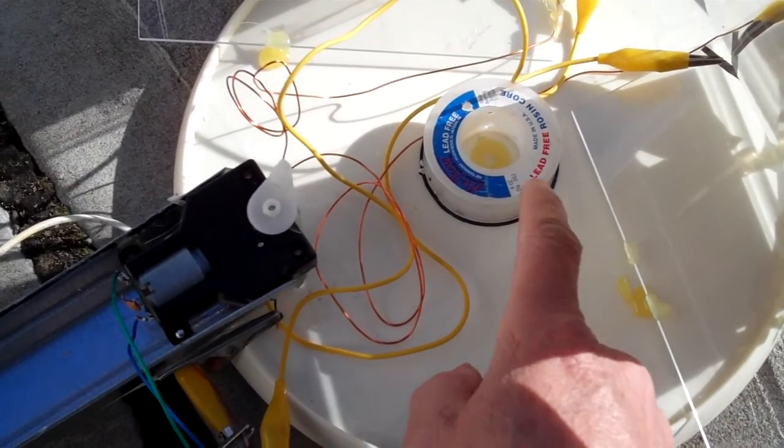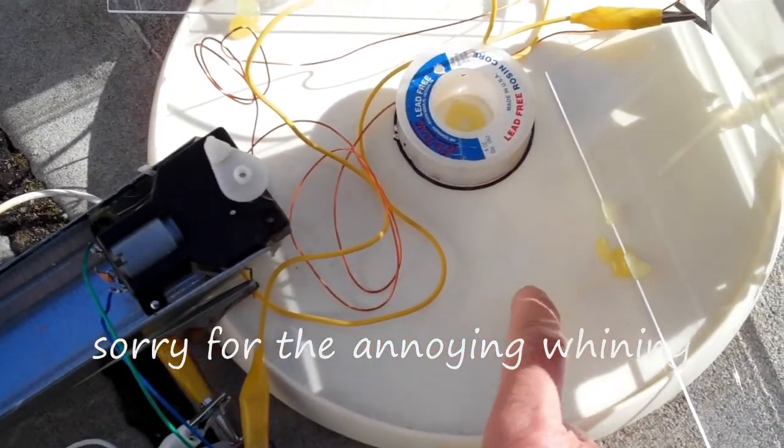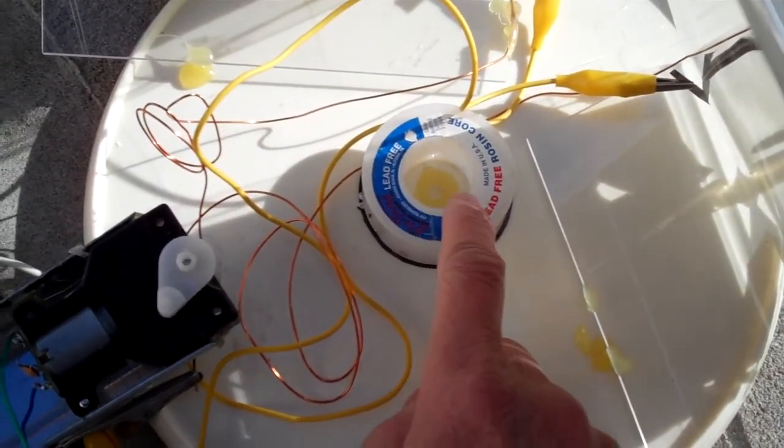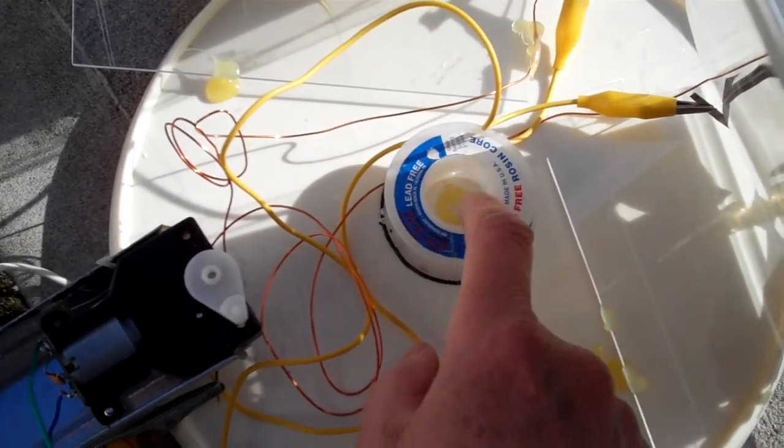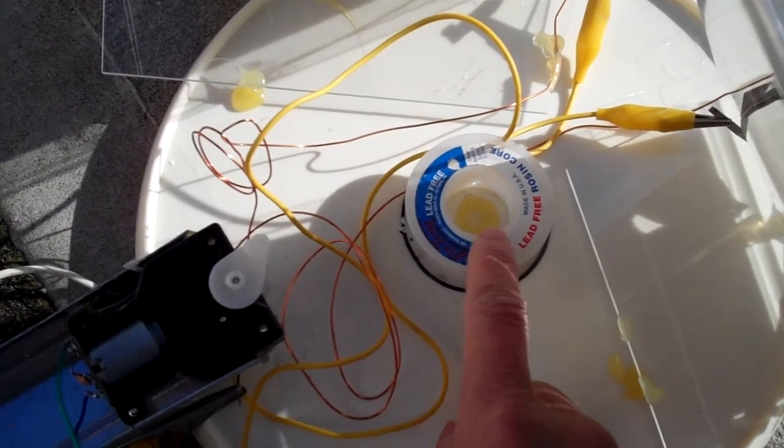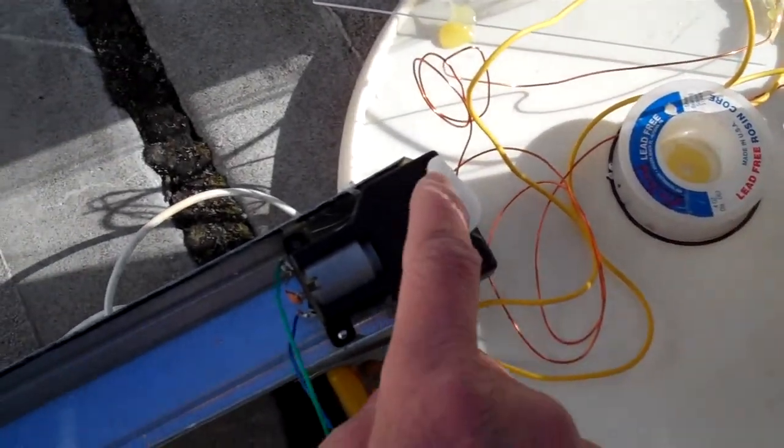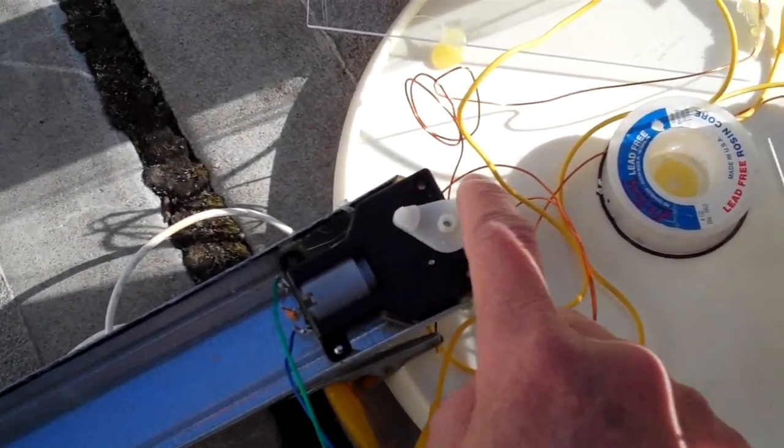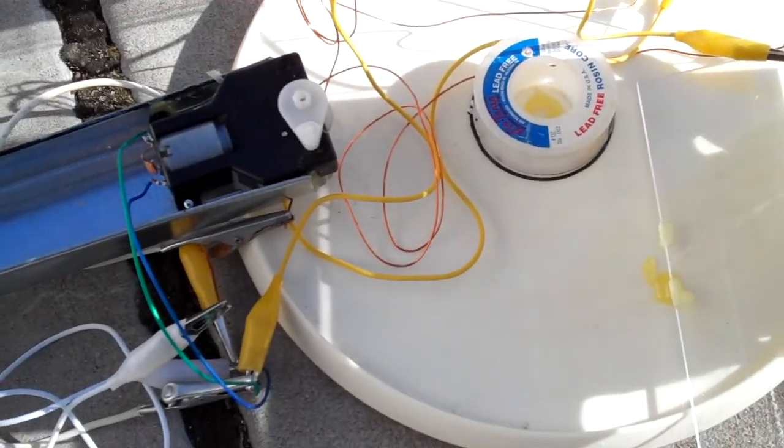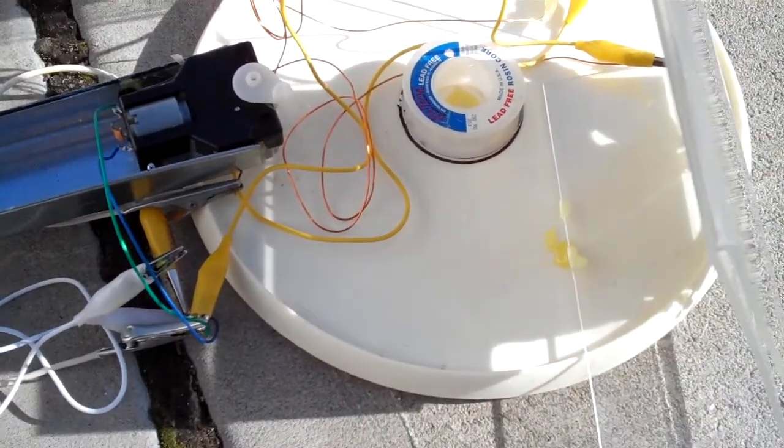So here's how this works. I have a lazy Susan here, an empty solder spool. I put some hot melt glue and just stuck it on the lazy Susan. So you can drill the hole here and here, you have the motor. You can hear it spinning and spinning around on solar energy.